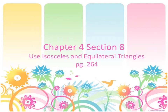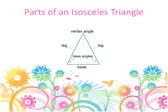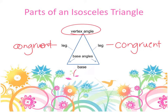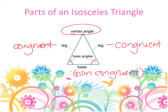So there are two major concepts from 4-8 that you need to know, and they're both based on isosceles triangles. What do we know about an isosceles triangle? Two sides are equal. We need to know the vocab: the two congruent sides are called legs, the non-congruent side is the base, the angle where the two congruent sides meet is called the vertex angle, and the two angles across from those congruent sides are called the base angles.